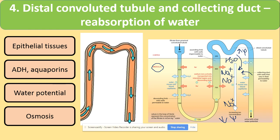Water reabsorption from the collecting duct back to blood vessels is controlled by the hormone ADH. If you are dehydrated and sodium ion concentration is high, ADH is released from the pituitary gland. The hypothalamus has osmoreceptors that detect dehydration — the osmoreceptor cells shrink, signal the gland, and ADH is secreted. ADH makes the membrane more permeable to water by producing aquaporins, which are channel proteins in the membrane, allowing reabsorption of water. This completes the topic of reabsorption.